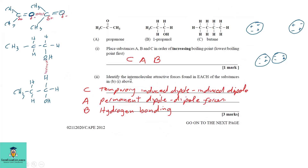Part b2: identify the intermolecular attractive forces in each substance. C, butane, has temporary induced dipole-induced dipole forces. A, propanone, has permanent dipole-dipole forces. B, propan-1-ol, has hydrogen bonds, which are the strongest of the intermolecular forces.